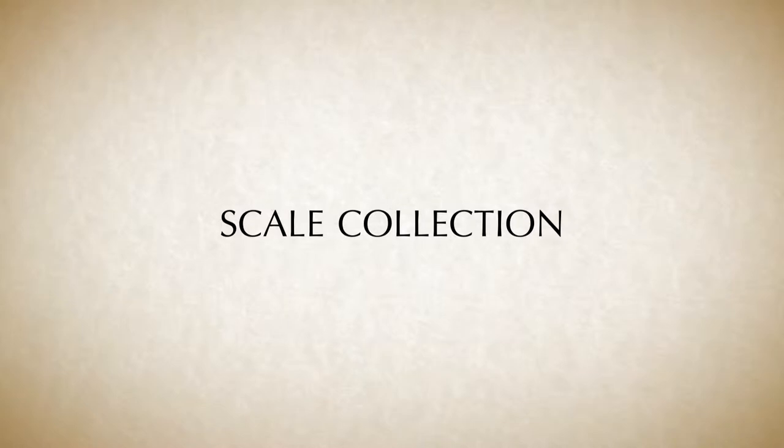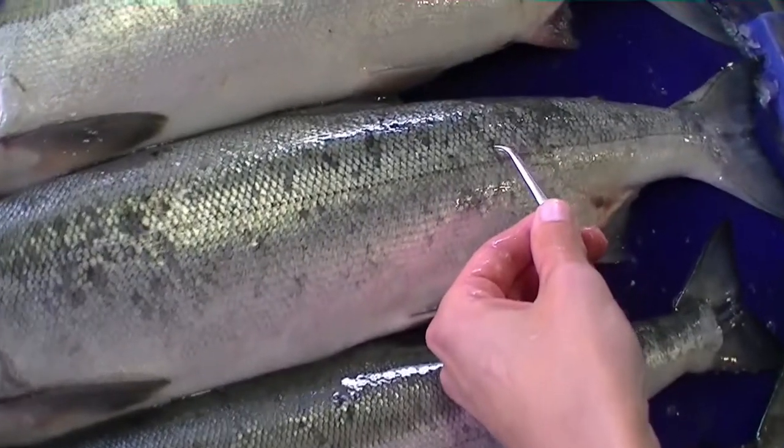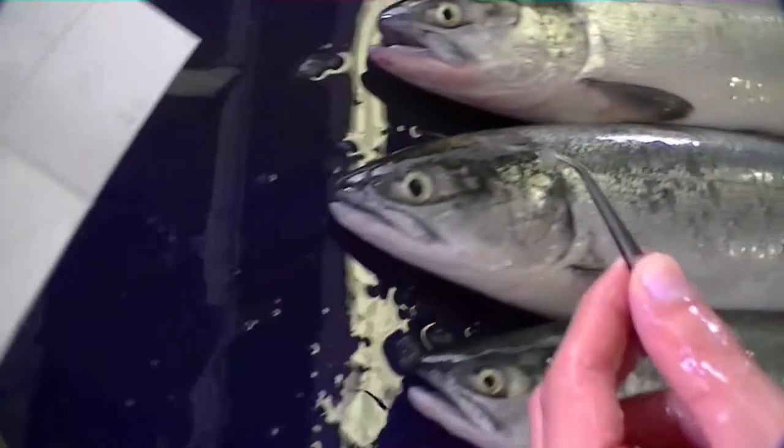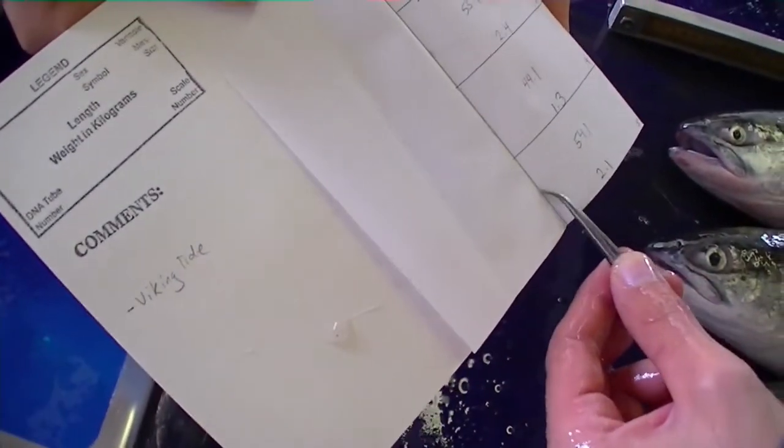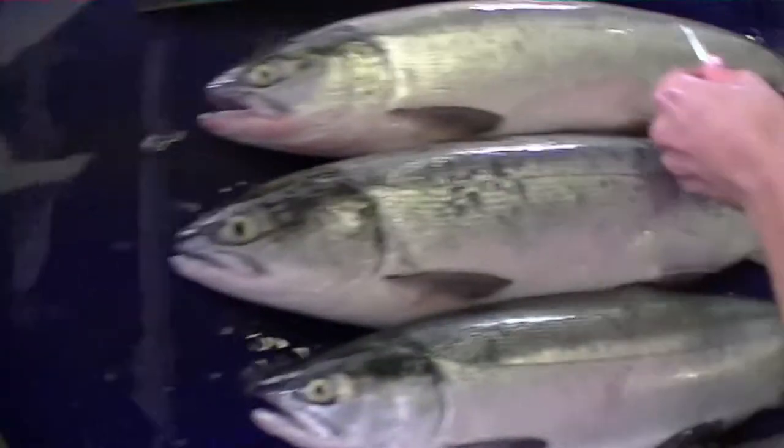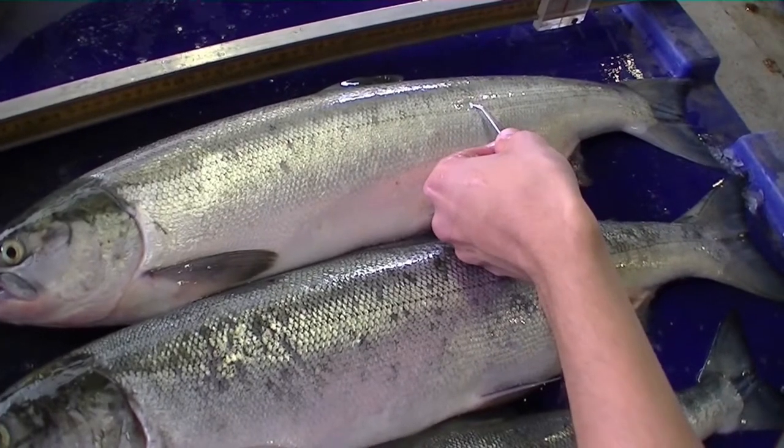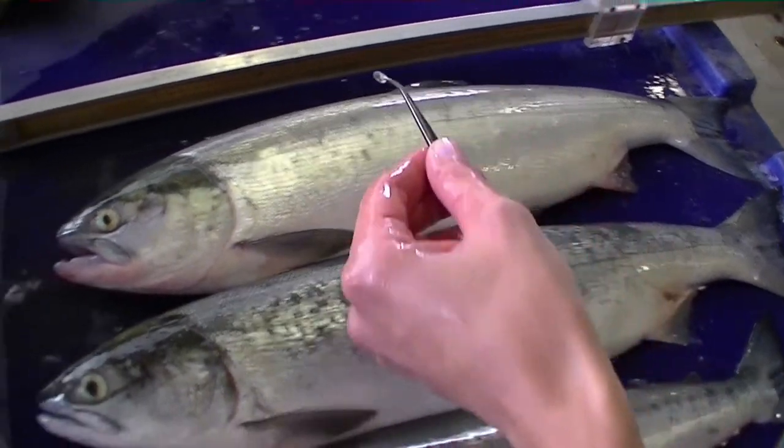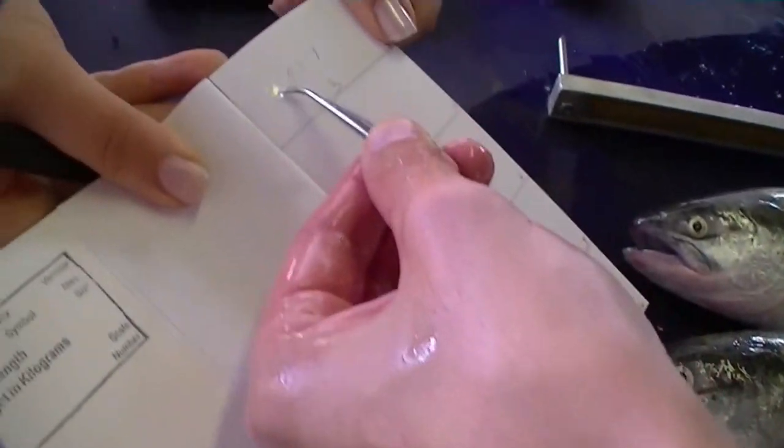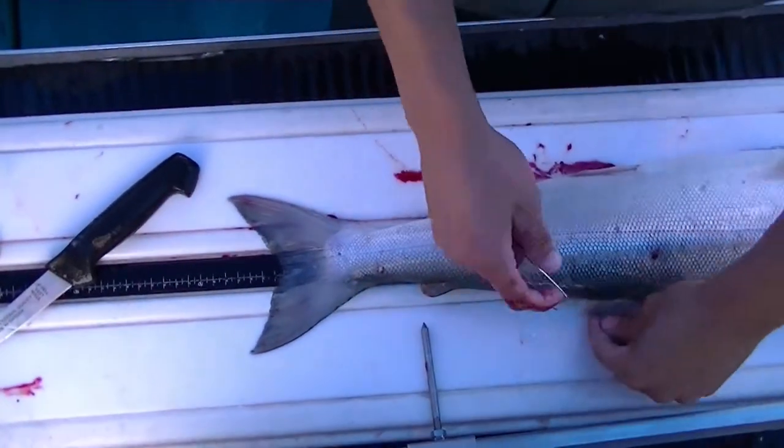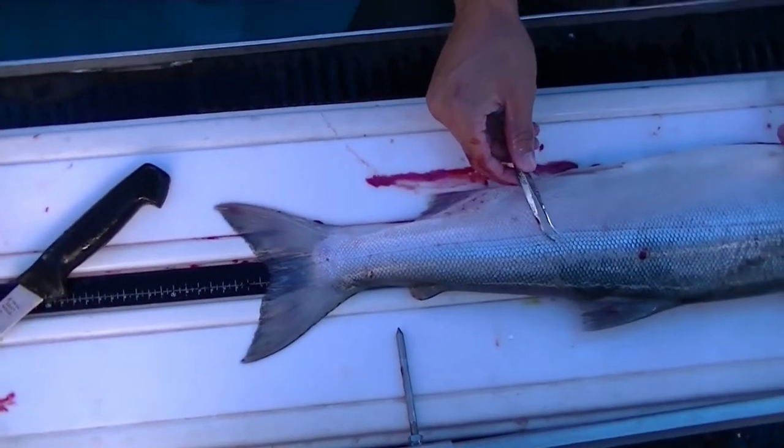Let's move on to the collection of a scale sample. A single scale should be collected from each salmon using a set of forceps. Ideally, the preferred scale should be collected, which is the scale located on the left side of the salmon, two scale rows above the lateral line, and along a diagonal line from the back of the dorsal fin to the front of the anal fin. You can see how the sampler traces this location using the forceps prior to collecting the scale.